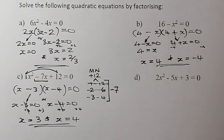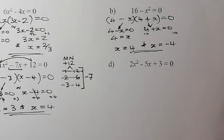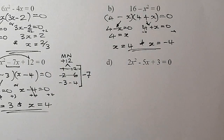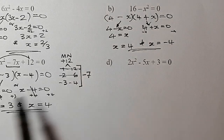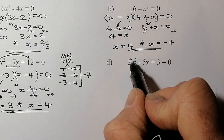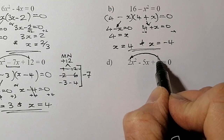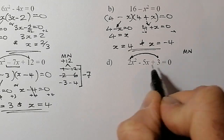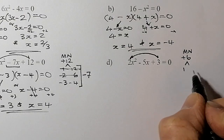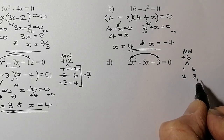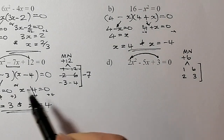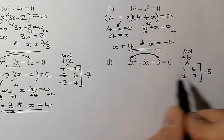The final example is 2x² − 5x + 3 = 0. The 2 at the front makes factorizing a bit more complicated — check out my other videos for more on trinomials with a leading coefficient. The magic number is found by multiplying the outer two numbers: 2 times 3 gives a positive 6. The factor pairs of 6 are 1 and 6, and 2 and 3.